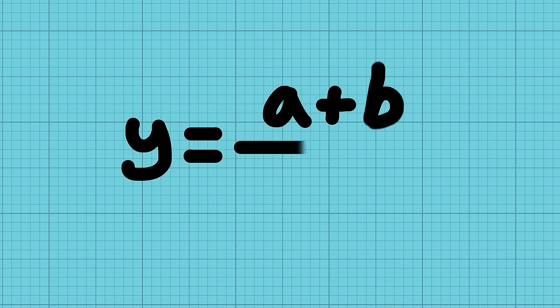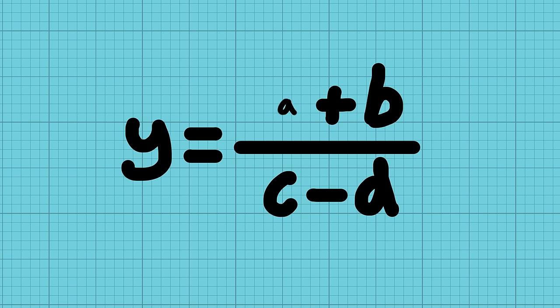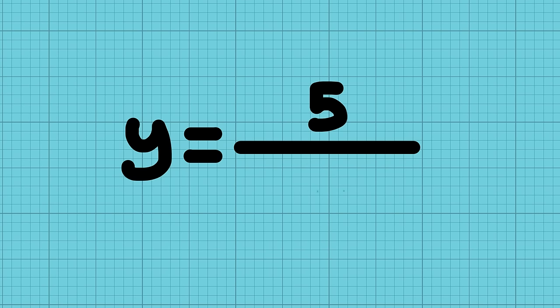If you've got a division but there's an addition or subtraction at the top or bottom, you need to make sure these are done first before you can do the division.